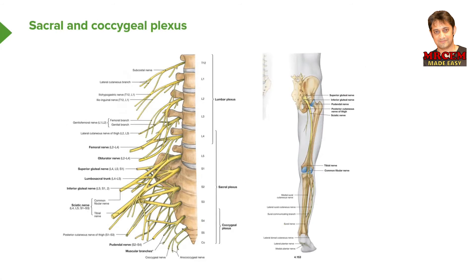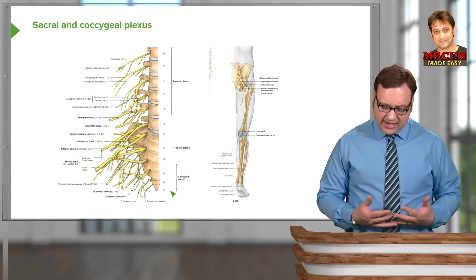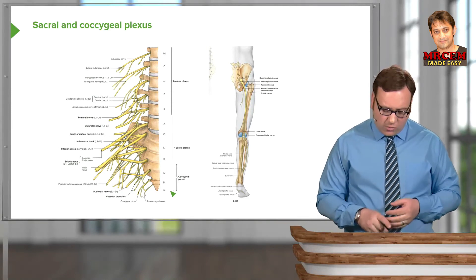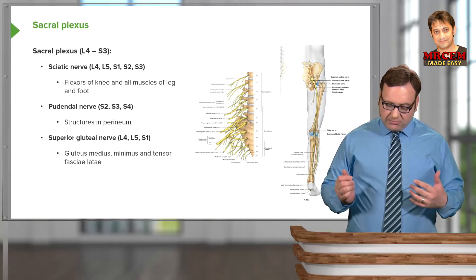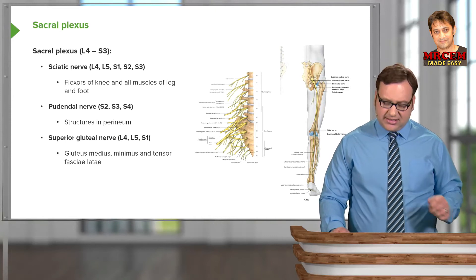Now let's move on to the sacral and coccygeal plexi. The sacral plexus really overlaps the coccygeal plexus, coming from L4 all the way down to the only coccygeal spinal cord segment. The main nerve to come from this plexus is the sciatic nerve. The sciatic nerve is a big nerve — about two centimetres wide — coming from L4, L5, S1, S2 and S3.